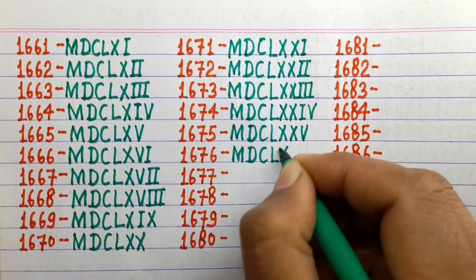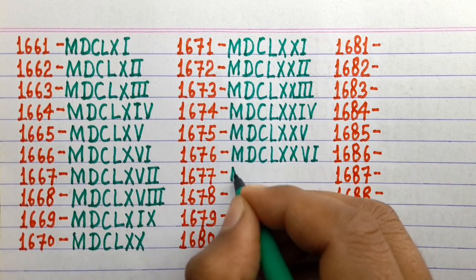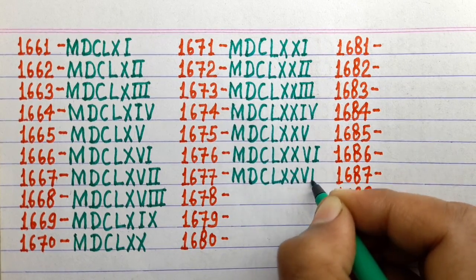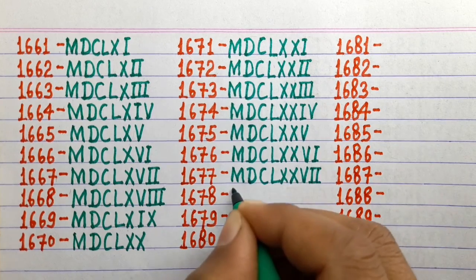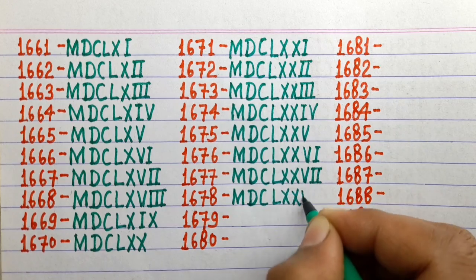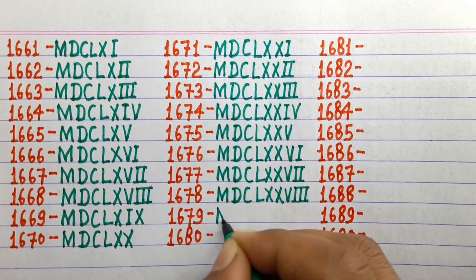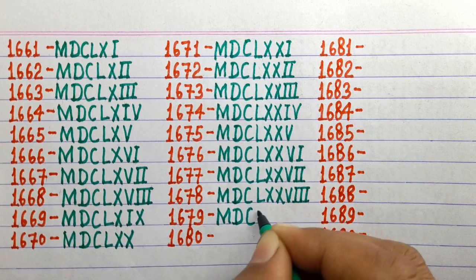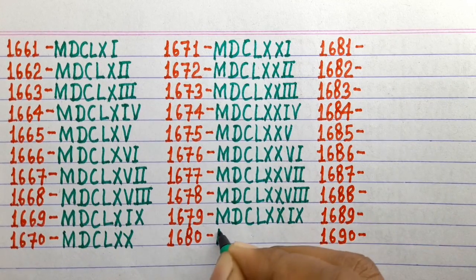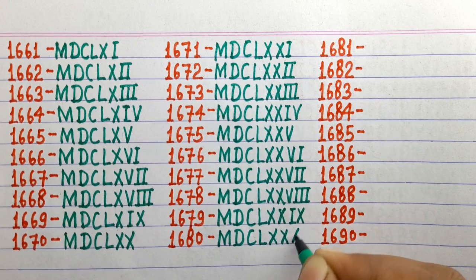1676 MDCLXXVI, 1677 MDCLXXVII, 1678 MDCLXXVIII, 1679 MDCLXXIX, 1680 MDCLXXX.